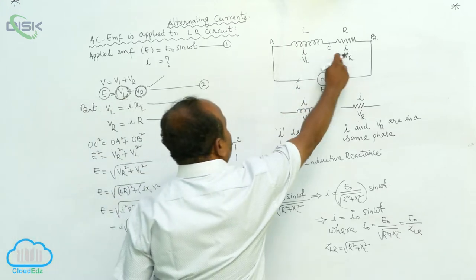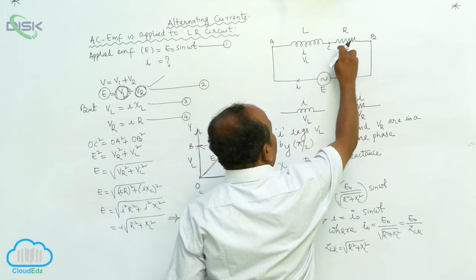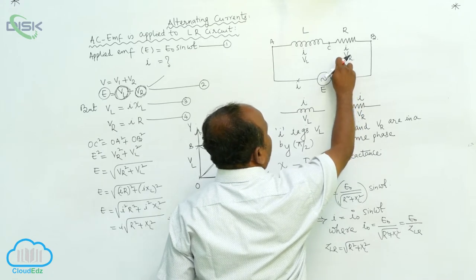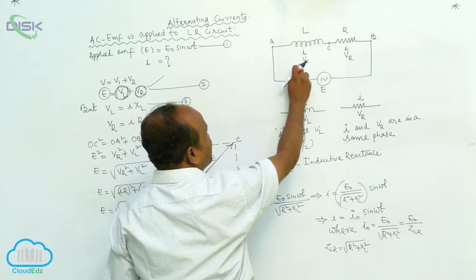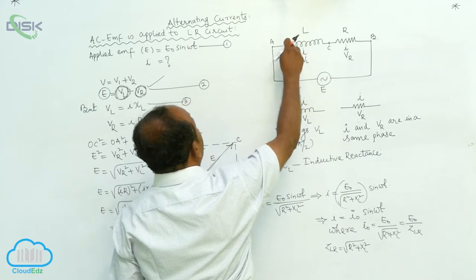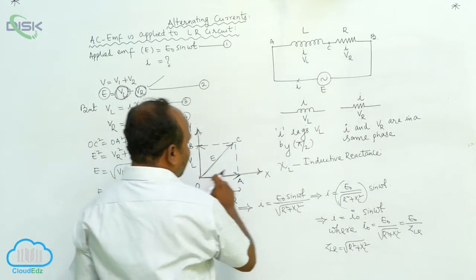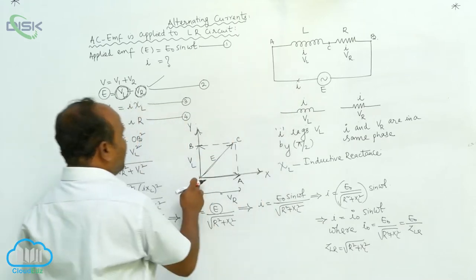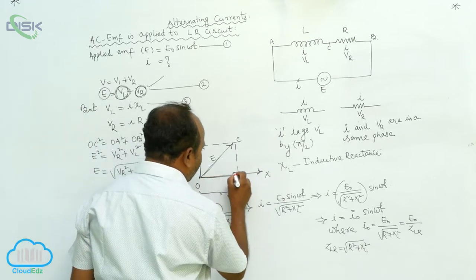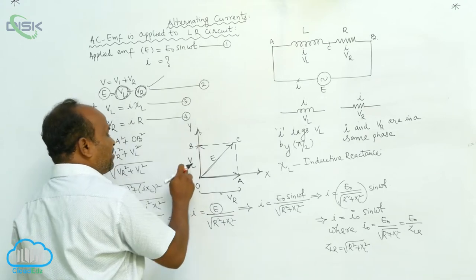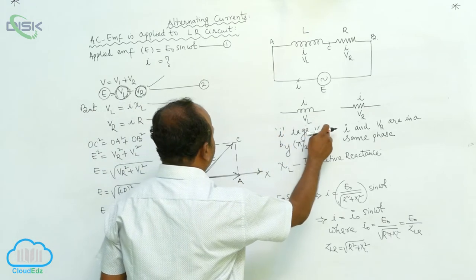How to calculate the resultant? In the case of a resistor, current and voltage are in the same phase. In the case of an inductor, current is lagging behind the voltage by 90 degrees. That is why VR is taken along the x-axis and VL is taken along the y-axis — because these two are perpendicular, since current is lagging behind the voltage by 90 degrees.